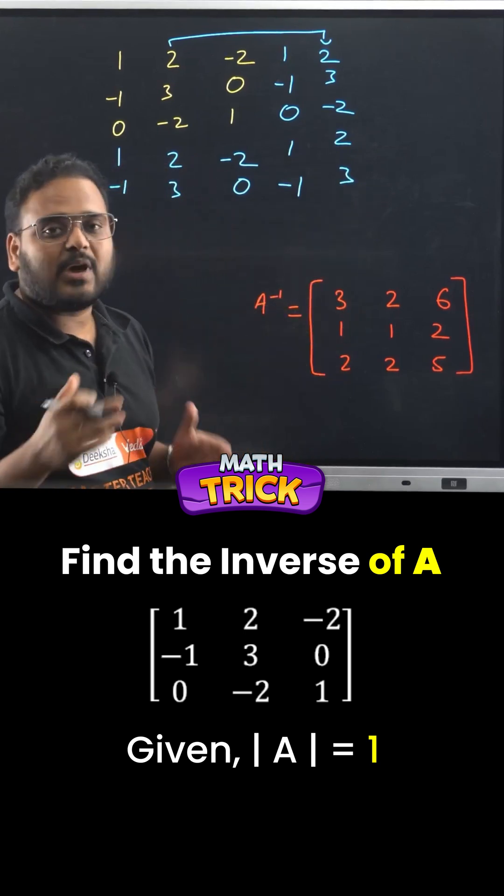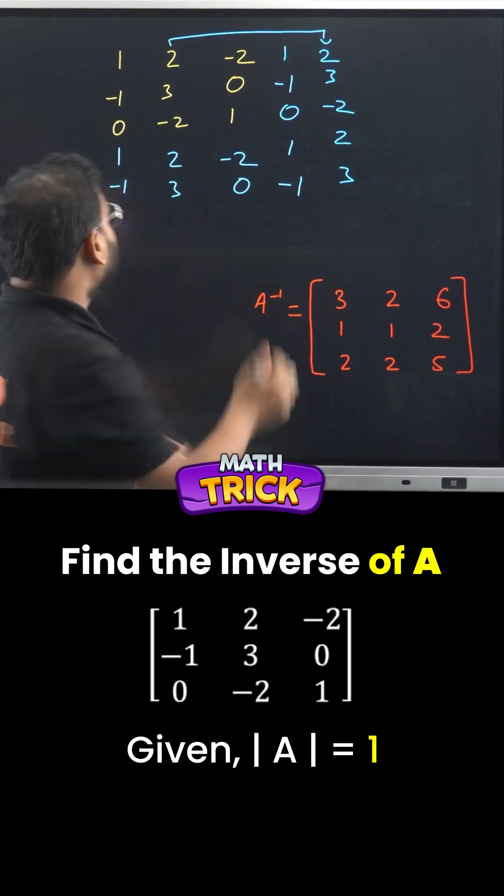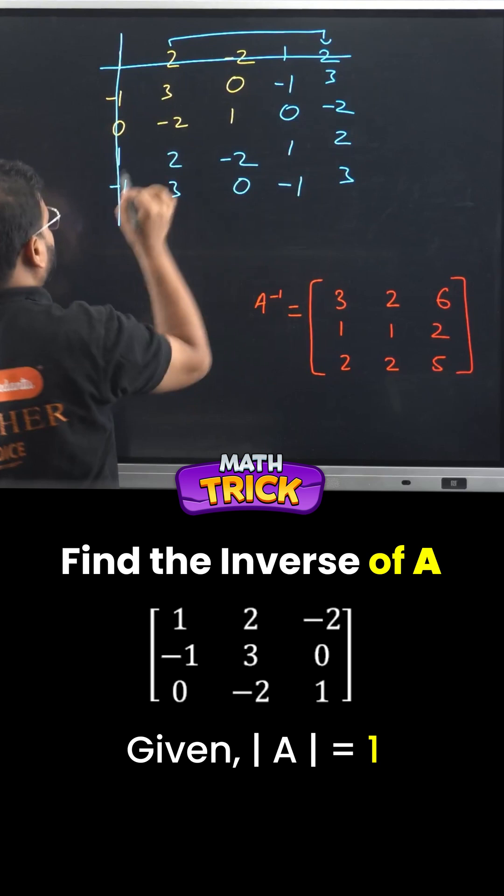Now next step is to eliminate the first row and first column of this so obtained 5x5 matrix. First row is eliminated with first column, okay?